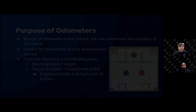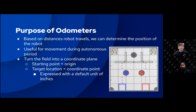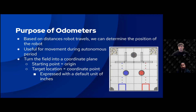Odometers in FTC are used to track the position of the robot on the field. In the Freight Frenzy Challenge, for a team to know if the robot is in the warehouse or not, they can use odometry to figure out where the robot is. The starting point would be the origin and the target location would be the coordinate point the team would set. Then the robot would go from the origin to the coordinate point, either in a straight line or in many different curves, and the default unit is usually inches.